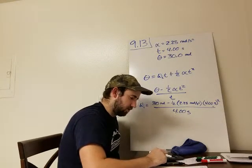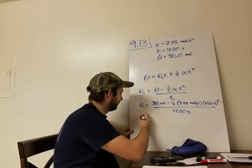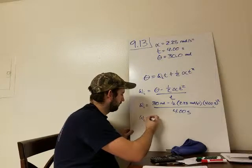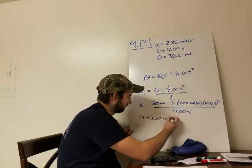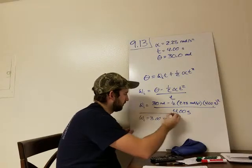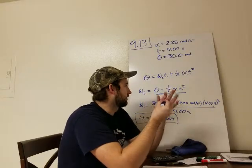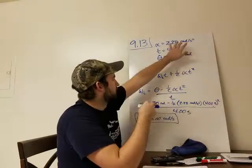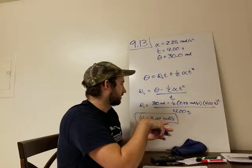And we end up with exactly 3 radians per second. So that initial angular velocity with that constant acceleration ends up being 3 radians per second.